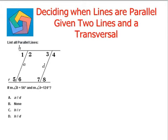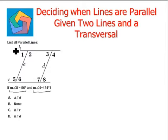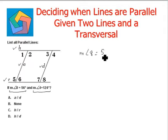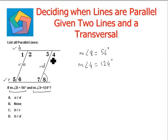The first question says: list all parallel lines. We are given that the measure of angle 8 is 56 degrees and the measure of angle 4 is 124 degrees. Here we see two lines H and R, and also lines A and D, with angles 1 through 8 formed. Marking angle 8 and angle 4 on the diagram.